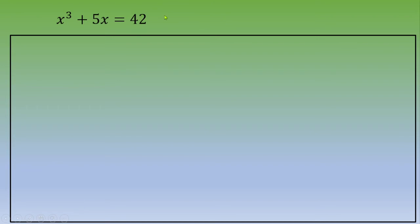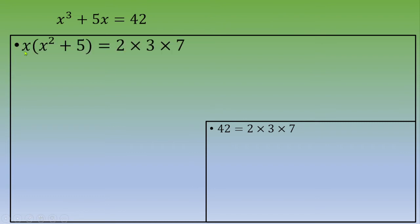Next step is to decompose 42 into 2 times 3 times 7. So now we could write down that x times x squared plus 5 equals 2 times 3 times 7.